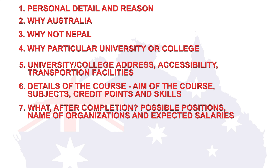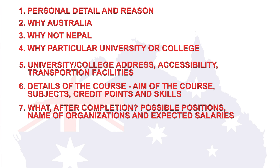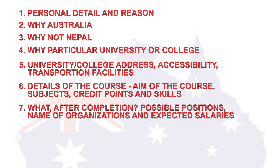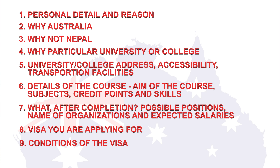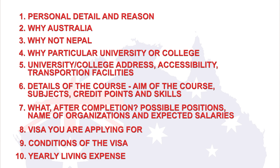Point number seven, upon completion of the course, what will you do when you return to Nepal or your home country. You will need to mention the position you want to work in, name some organizations you want to work in, mention the salary you'll be expecting, and so on. Point number eight, mention the visa you're applying for. Point number nine, what are the conditions of the visa. And lastly, point number ten, mention the yearly living expenses.